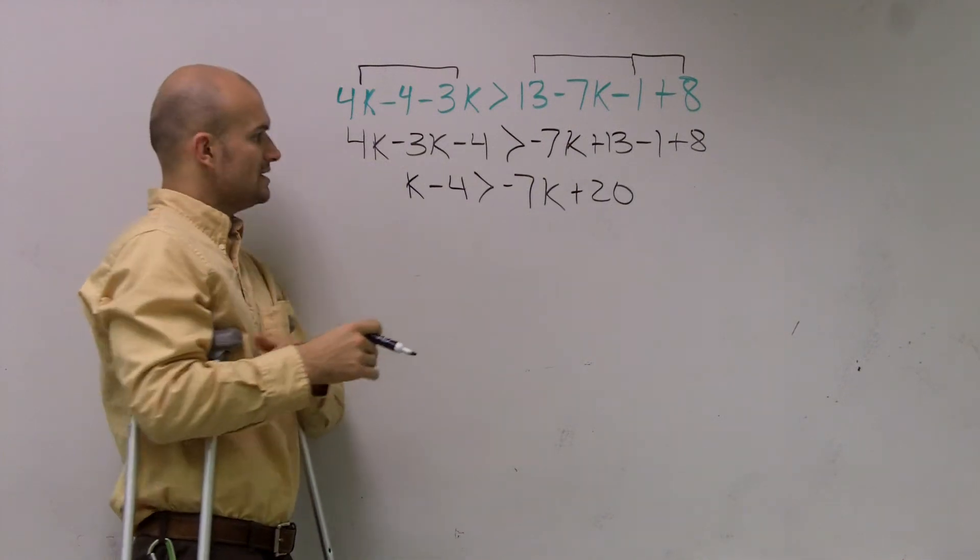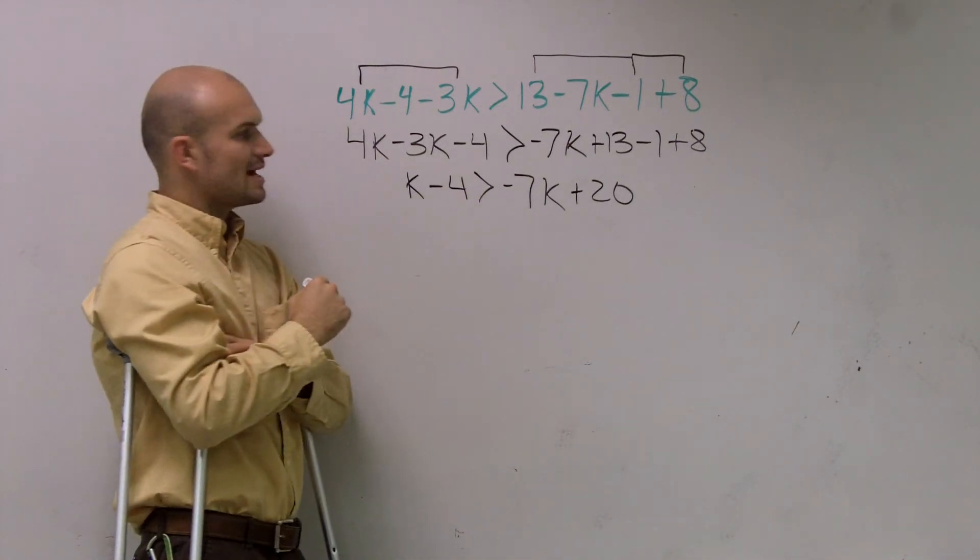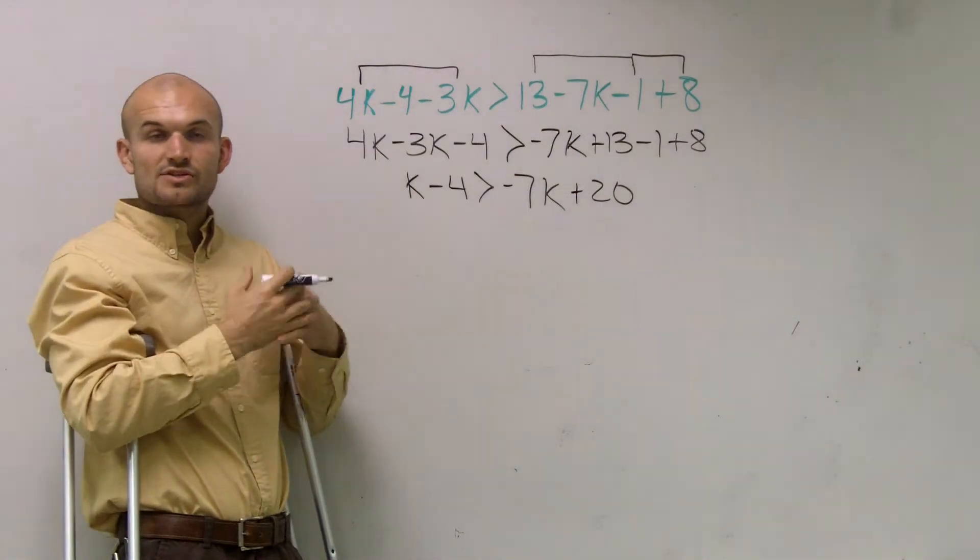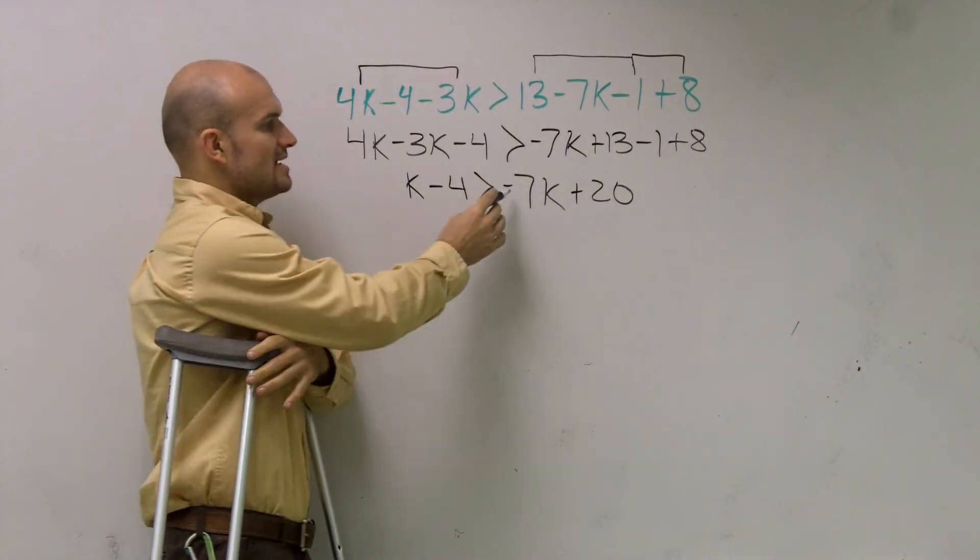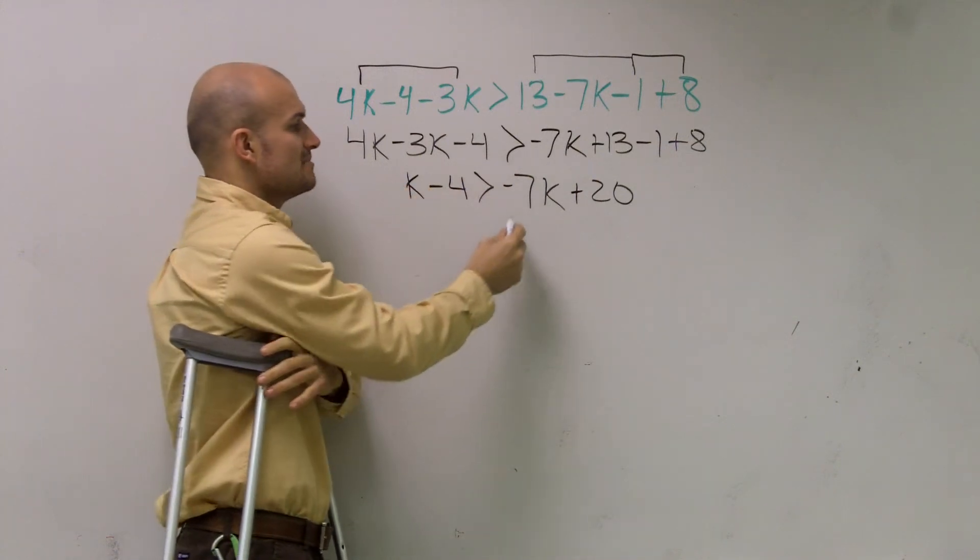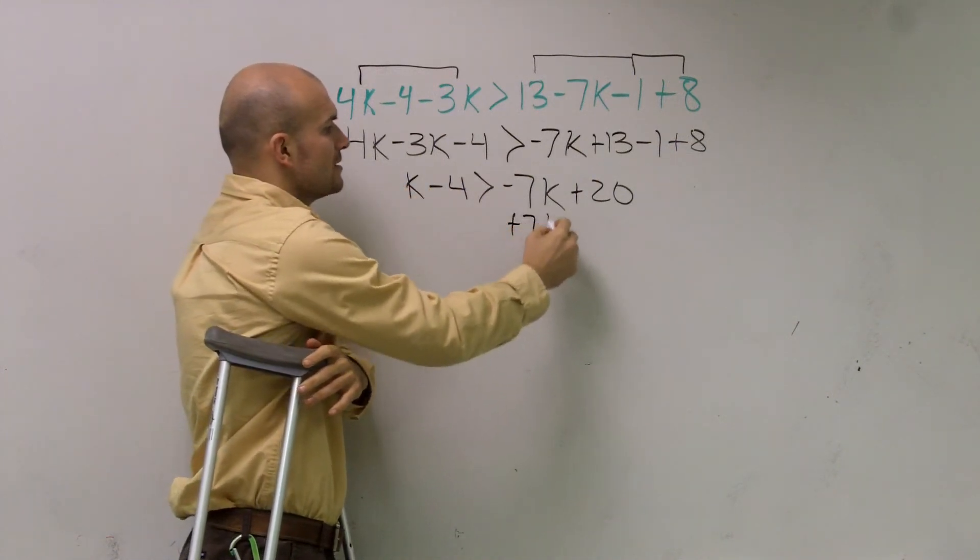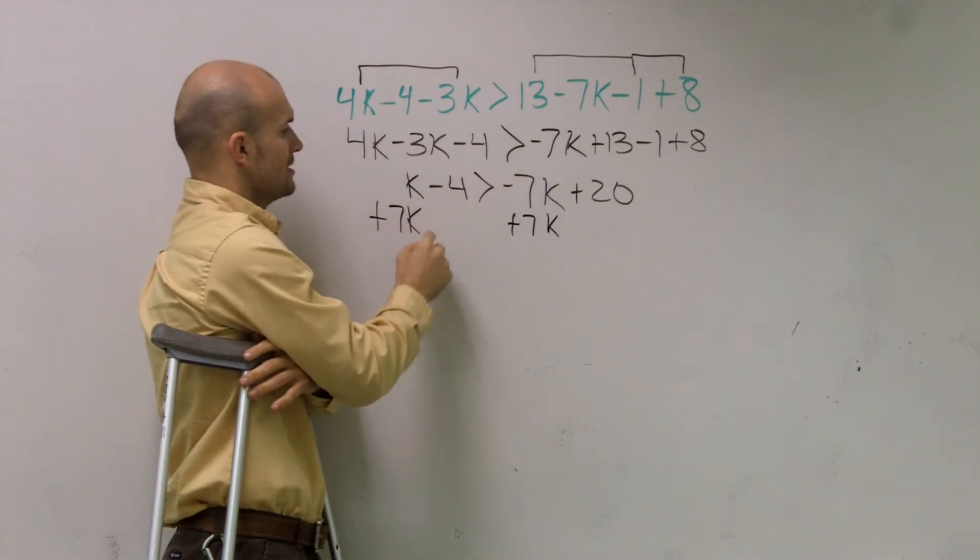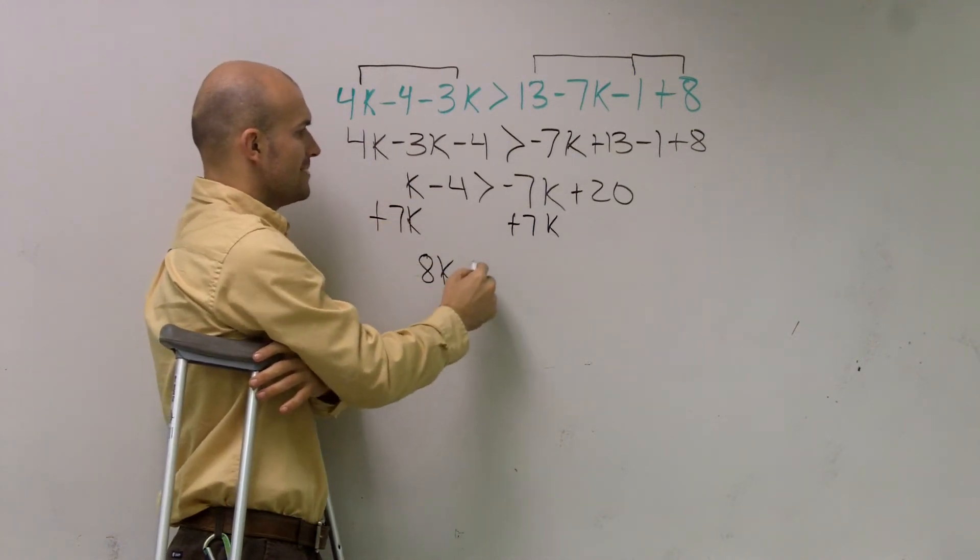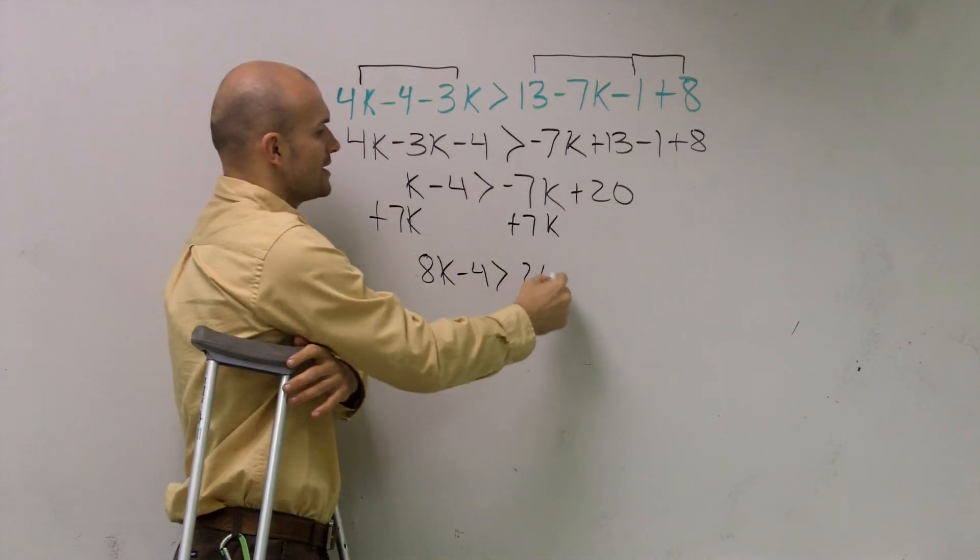So now what I need to do is get my k's on the same side. I like to get rid of the smaller k so that I avoid negative numbers. Since this is a negative 7k, that's going to be smaller. So I'm going to add 7k. k plus 7k gives me 8k, minus 4 is greater than 20.